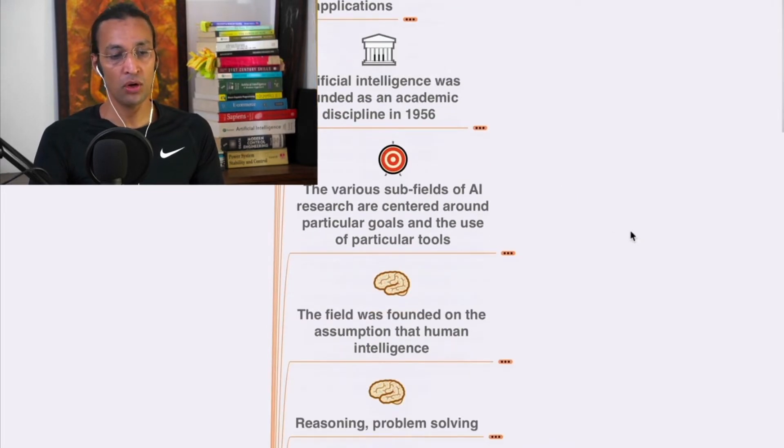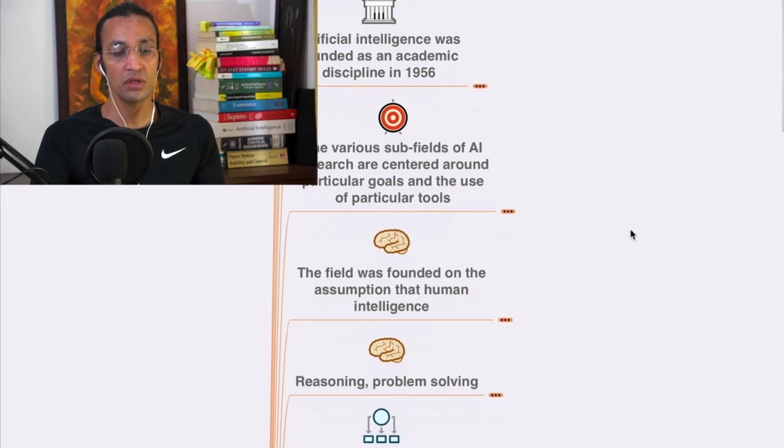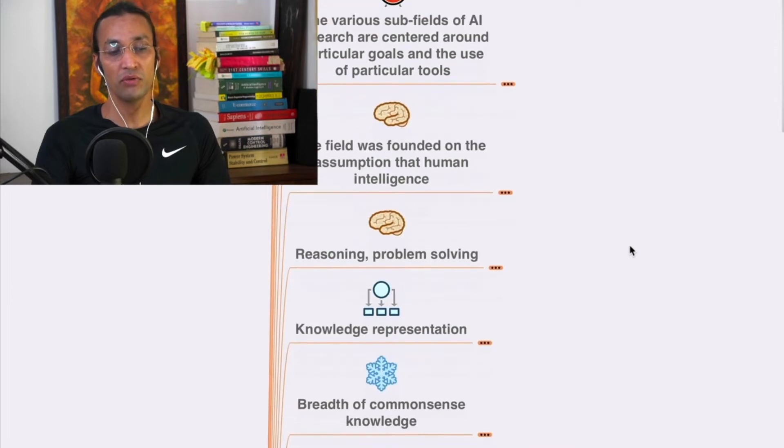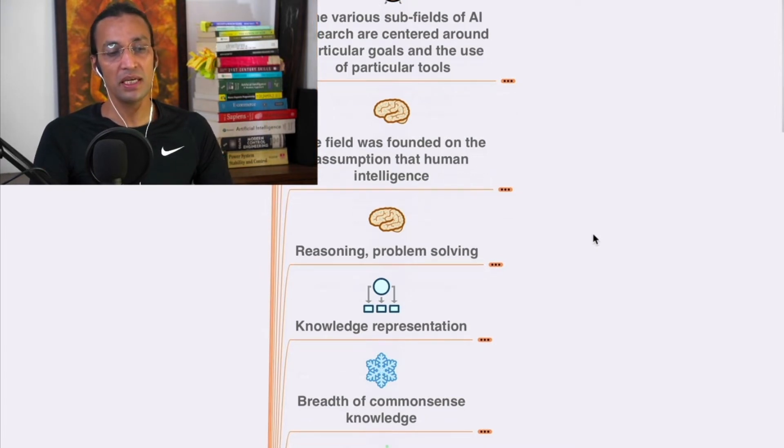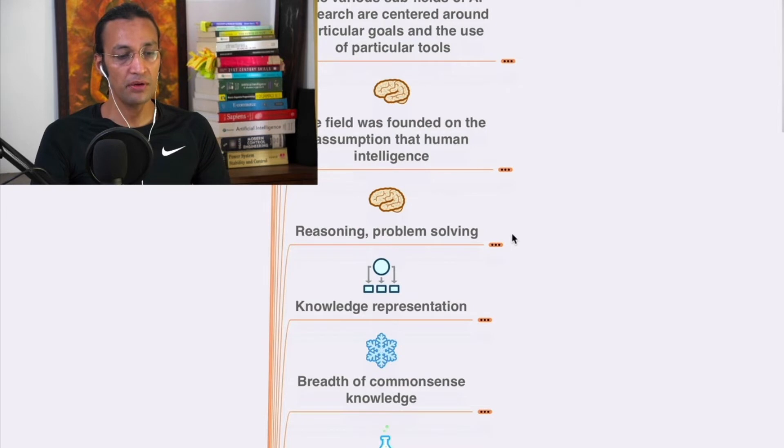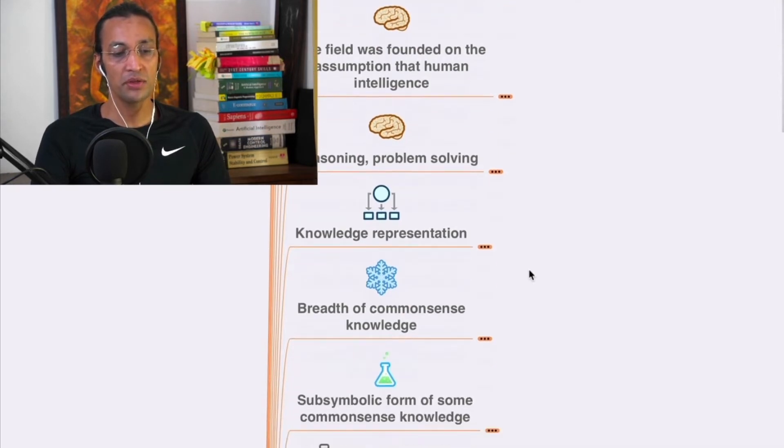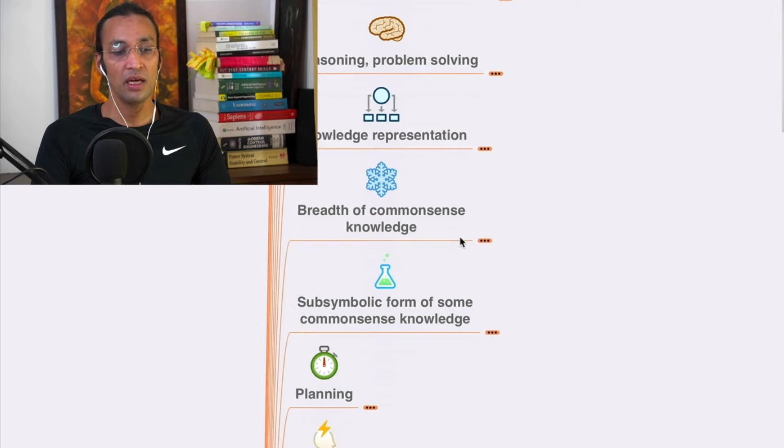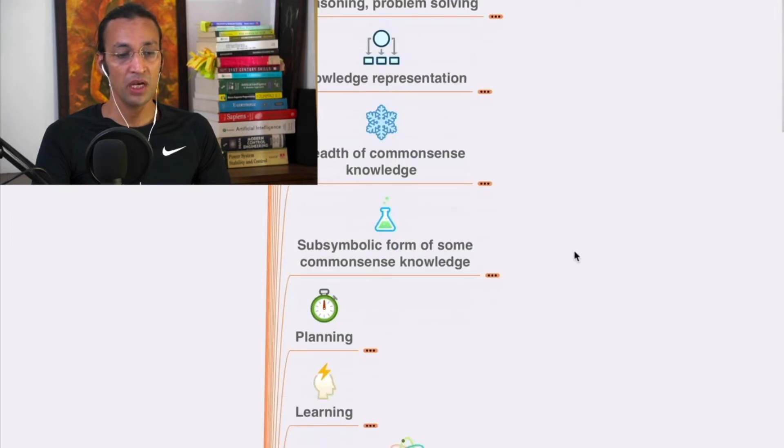We'll go through the history and various sub-fields of AI research created around particular goals and the use of particular tools. The field was founded on assumptions about human intelligence. We'll go deep into all these concepts one by one: reasoning, problem solving, knowledge representation, breadth of common sense knowledge, symbolic form of common sense knowledge, planning, and learning.